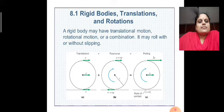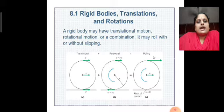Now let us discuss rigid bodies and translational motion and rotational motion. A rigid body may have translational motion, rotational motion, or a combination of both. It may also roll without slipping.